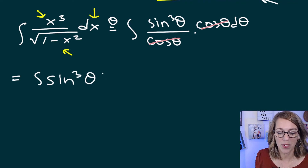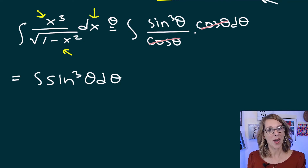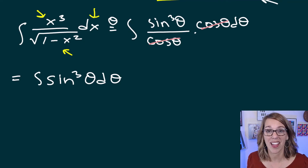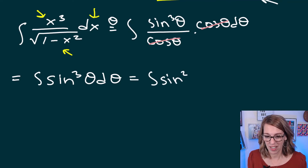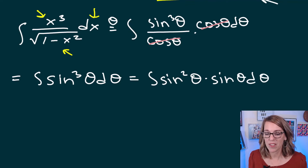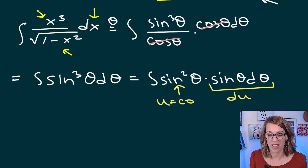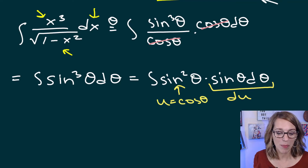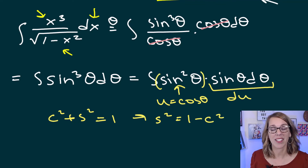Now I'm working through this trig integral: ∫sin³(θ) dθ. I need to break sin³ down to get a u and a du. I'll separate it as sin²(θ) · sin(θ) dθ, thinking of sin(θ) dθ as part of du, with u = cos(θ). Using the Pythagorean identity — cos²(θ) + sin²(θ) = 1 — I get sin²(θ) = 1 − cos²(θ), so I can replace sin²(θ) with 1 − cos²(θ).